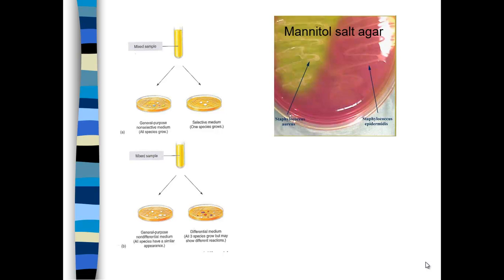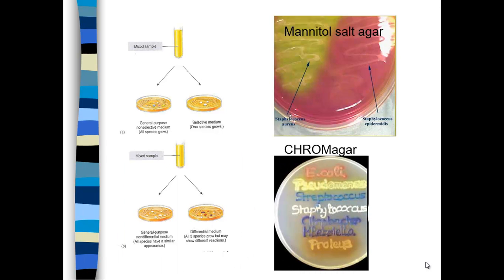Here's mannitol salt agar, which is both selective and differential. Mannitol salt agar has a high salt concentration, so it only grows gram-positive organisms, which have a thicker cell wall. But it also specifically identifies Staphylococcus aureus, which is an infective type of staph — it causes a color change from pink to yellow due to a pH change. So mannitol salt is selective because it only grows gram-positive organisms, but also differential because it differentiates S. aureus by providing a yellow color. Here's chrome agar, which is differential — many things can grow in it, but you see lots of visual differences depending on the genus and species.